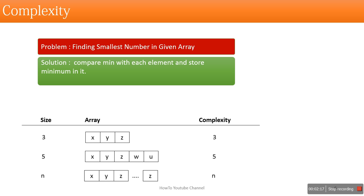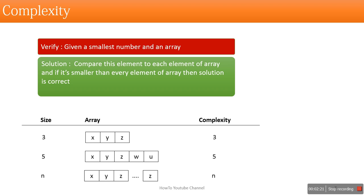Now let's say someone has provided a solution for this problem and told you that this is the smallest number in the array. How are you going to verify it? For verification, you will check whether there is any element in the array which is smaller than that element. If you don't find any element less than the minimum element, that solution is correct. So for verification, again you have to compare this minimum element with every element of the array — so in the verification phase there are also n comparisons, giving complexity n. So we have discussed two parts: the solution part and the verification part. Both have complexity n.